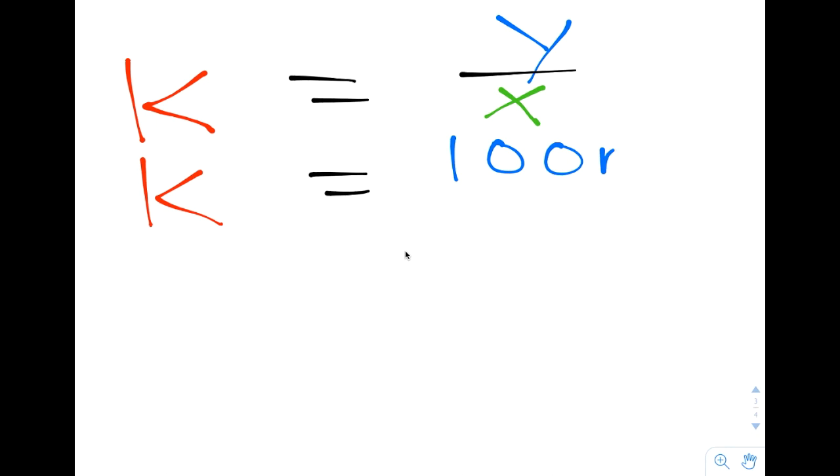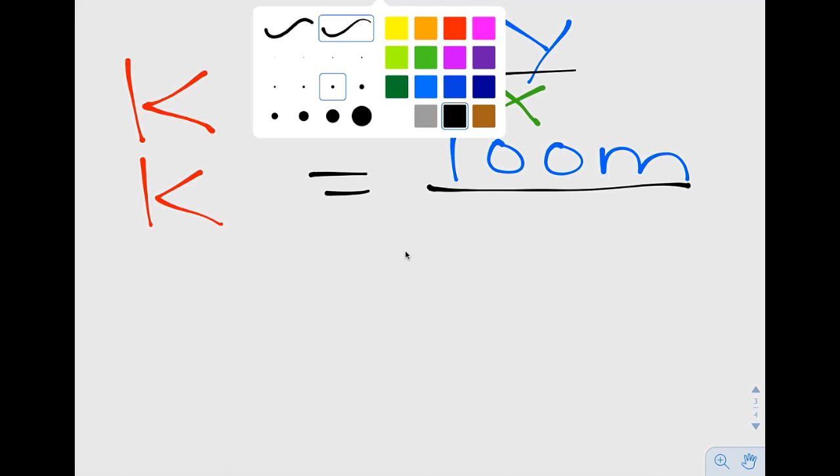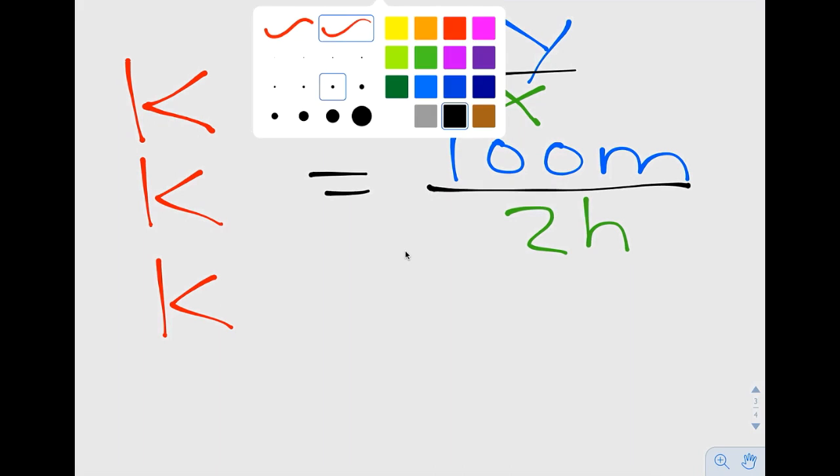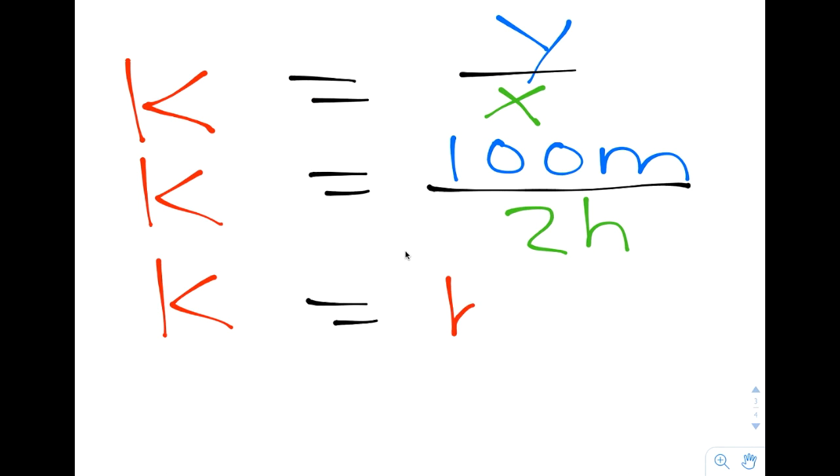So to find k in the example 100 miles per 2 hours, just divide 100 by 2. We can see that the constant of proportionality is 50. I think of it as kind of like finding the unit rate, which would be 50 miles per hour.